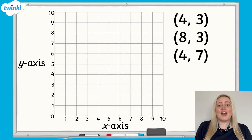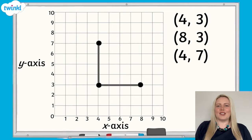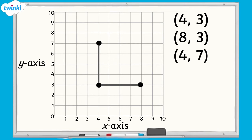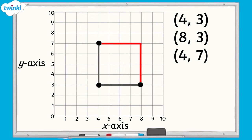Look at this set of coordinates. These are the coordinates for three of the vertices of a square; the fourth vertex is missing. If we plot these coordinates and join the points together, you can see two of the sides of the square. What do you think the coordinates are for the point that's missing? One thing we know about squares is that all their sides are of equal length, so if we complete our square by drawing in the remaining lines, the missing point will be here at 8, 7.